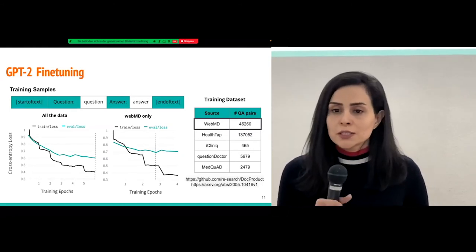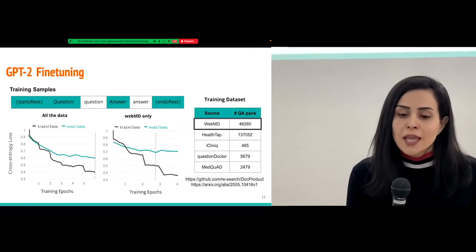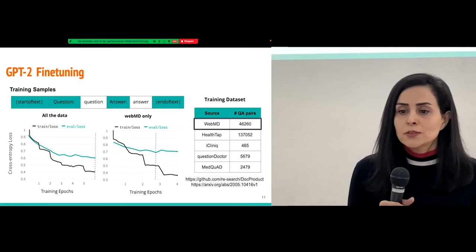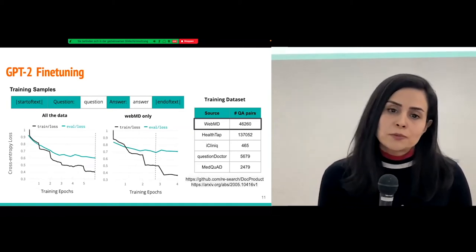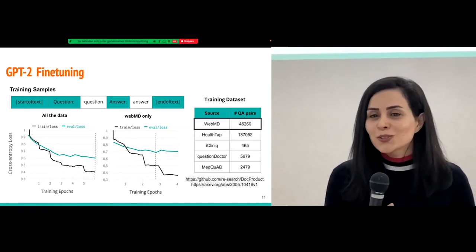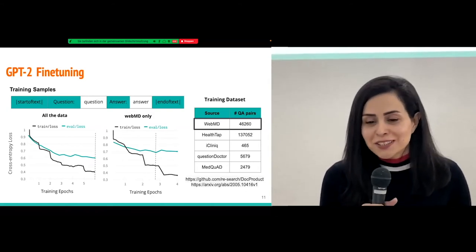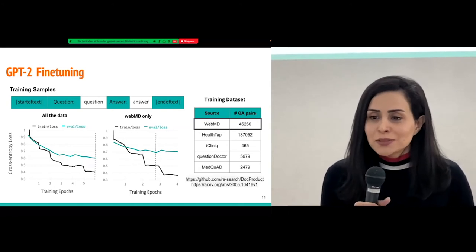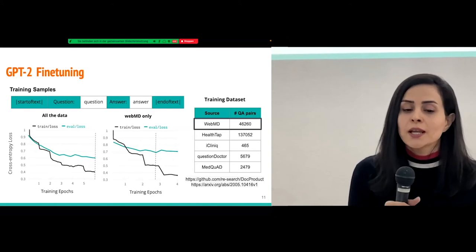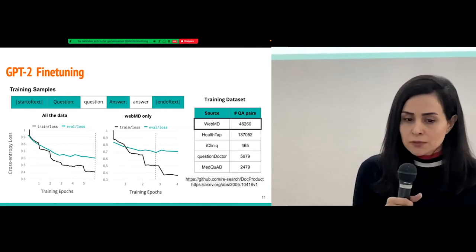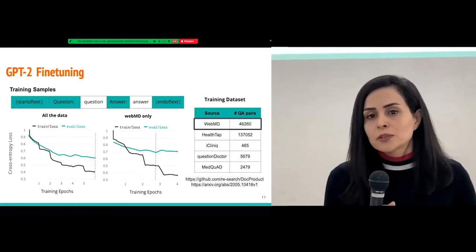And for fine-tuning, we collected a list of question-answers from websites that provide this type of question-answers related to health. And we also explored this data. We found out that the data from WebMD has a higher quality. So we decided to first train a model on WebMD, which has a higher quality, and also to use all the data for the training. And we generated our training samples, starting with the start of text token and ending with an end of text token to show the start and end of the question-answer pair. We wrote a question keyword and followed the question by it, and the same for the answer. We ran a training for WebMD data and all the data and took the model with the lowest validation loss.